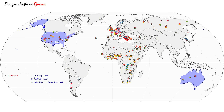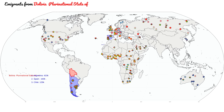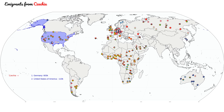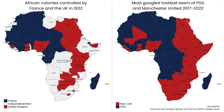That language connection is also one way in which the colonial past continues to affect countries today. In videos I have done on search patterns, former French colonies in Africa search for France while former British colonies search for the UK. You can even see it in search interest for football teams — Francophone countries are more interested in Paris Saint-Germain and English-speaking countries are more interested in Manchester United.